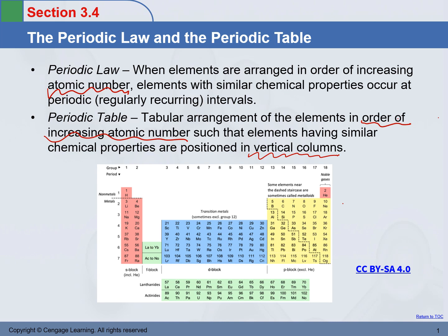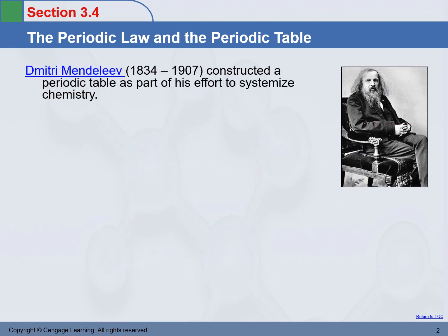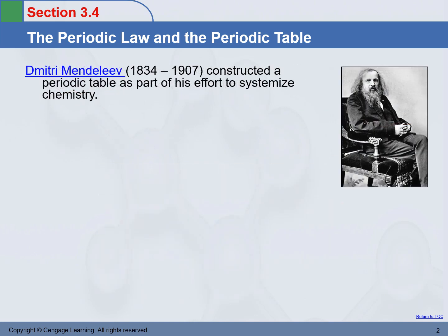Based on the description above, we know all the elements inside the same vertical column have similar chemical properties. This is an example of a Periodic Table. Talking about the Periodic Table, we have to talk a little bit about Professor Mendeleev.